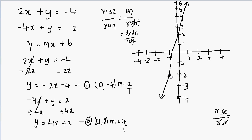So this is the intersection point. I make one more point by going up 2 and then moving left 1 again. I now have three points and can draw the line through them. You can see the two lines intersect, and the intersection point written as an ordered pair is negative 1 comma negative 2.